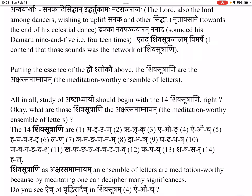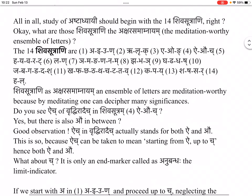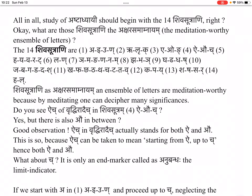What are those Shivasūtrāni? The 14 Shivasūtrāni are: (1) a-i-u-ṇ, (2) ṛ-ḷ-k, (3) e-o-ṅ, (4) ai-au-c, (5) ha-ya-va-ra-ṭ, (6) la-ṇ, (7) ña-ma-ṅa-ṇa-na-m, (8) jha-bha-ñ, (9) gha-ḍha-dha-ṣ, (10) ja-ba-ga-ḍa-da-ś, (11) kha-pha-cha-ṭha-tha-ca-ṭa-ta-v, (12) ka-pa-y, (13) śa-ṣa-sa-r, (14) ha-l. These Shivasūtrāni, as Aksharasamāmnāyam, an ensemble of letters, are meditation-worthy.